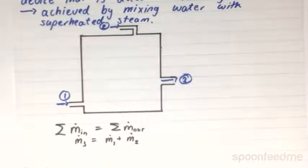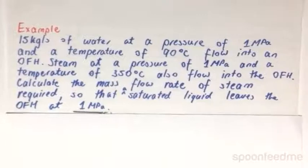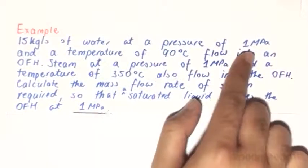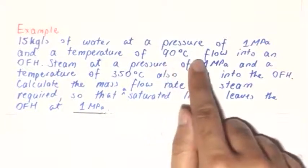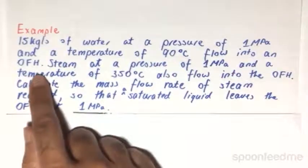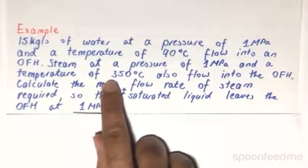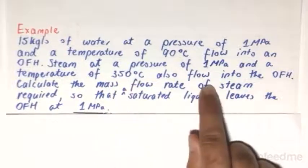So now, let us try the example. 15 kilograms a second of water at a pressure of 1 MPa and a temperature of 90 degrees Celsius flow into an open feedwater heater. Steam at a pressure of 1 MPa and a temperature of 350 degrees Celsius also flows into the open feedwater heater.